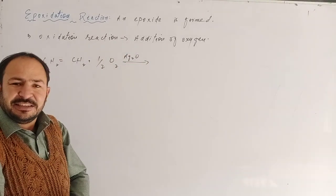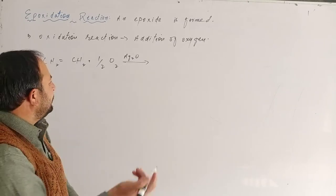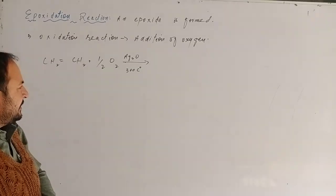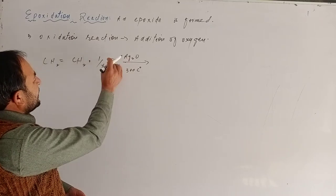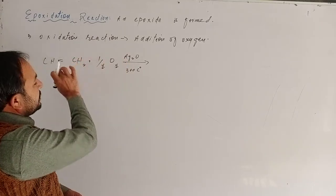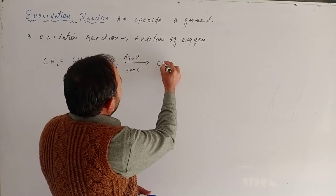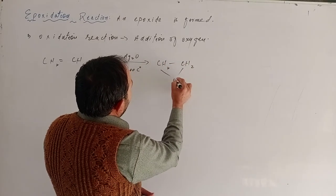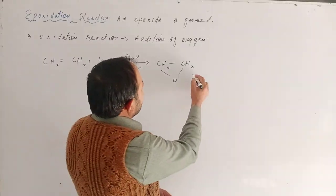To make this reaction occur, it is heated up to 300 degrees Celsius. Here oxygen is added across the double bond, and this compound formed is called an epoxide.